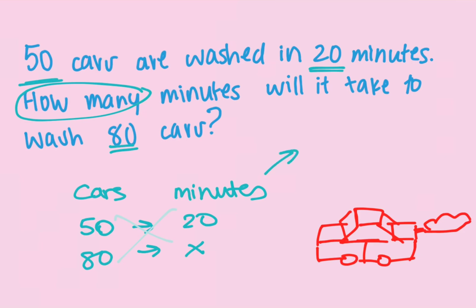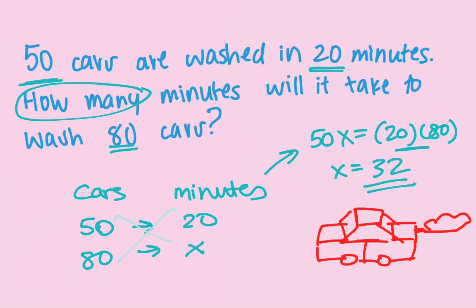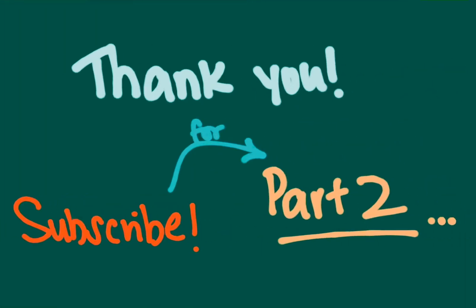How many minutes — our x — to wash 80 cars? Cross multiply and write: 50x equals 20 multiplied by 80. Multiply that out and divide by 50 using the calculator, and you get 32 minutes to wash 80 cars. Thank you so much! Subscribe and stay tuned for part two of word problems, where I'll give more difficult problems from the HISET and secrets on how to do them really fast.